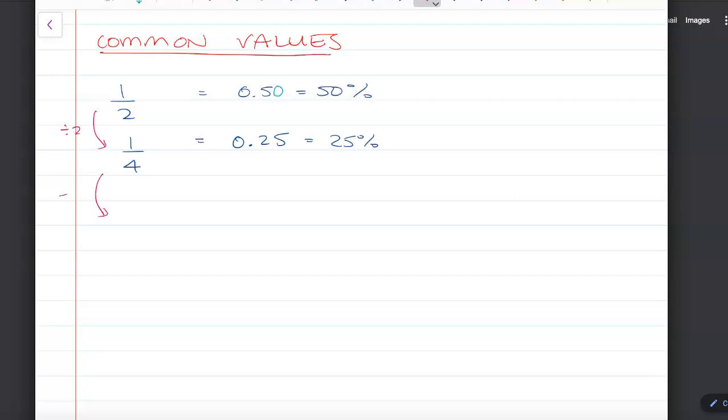If we half a quarter, we end up with one eighth, and this is one of the really important ones to remember. One eighth as a decimal is halving 0.25, which is 0.125, and half of 25 percent is 12.5 percent. So there are three really common ones that we can recall quite efficiently.